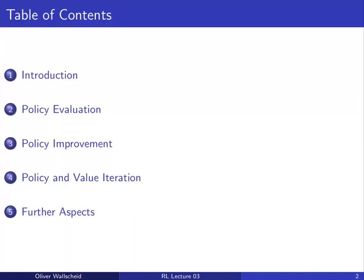Today's lecture is structured into five parts. First, we will discuss the requirements and basic intuition behind dynamic programming. Then we will use policy evaluation to estimate the value functions of a given policy, as well as policy improvement to find better policies compared to a baseline. Both steps are then merged applying policy iteration, with its special case called value iteration. Finally, we will briefly discuss some extensions and modifications to the standard dynamic programming framework.